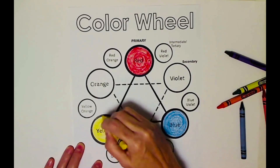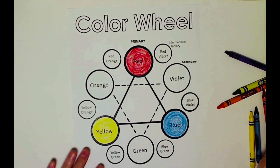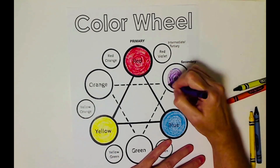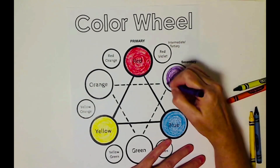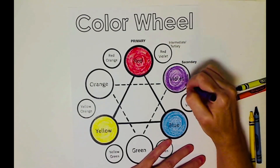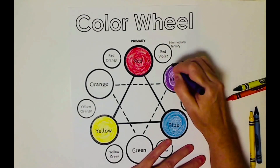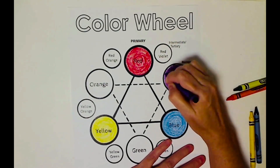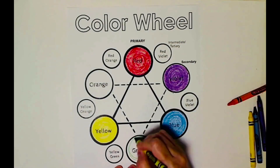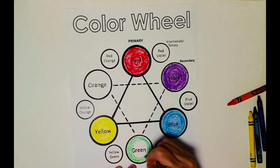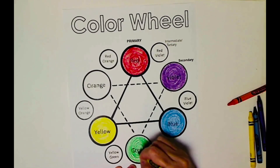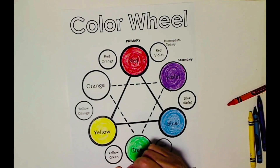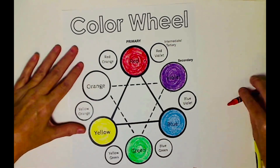Now we're going to color our secondary colors. What does red plus blue make? It is purple. We're still keeping good habits. What does blue plus yellow make? Green. And then the last one: yellow plus red equals orange.